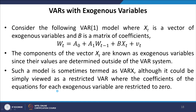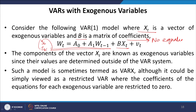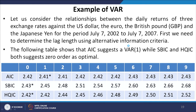VARs can also include exogenous variables. Consider a VAR(1) model where xt is a vector of exogenous variables and β is a matrix of coefficients, added to the reduced form. The components of xt are determined outside the VAR system, meaning there are no equations for them. Such a model is sometimes called VARx, though it can be viewed as a restricted VAR where the coefficients of equations for each exogenous variable are restricted to zero.